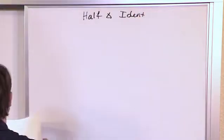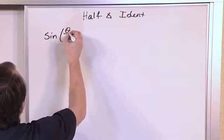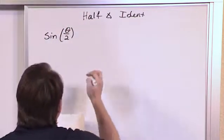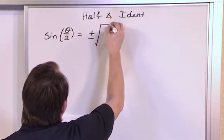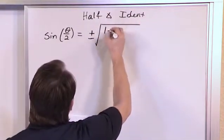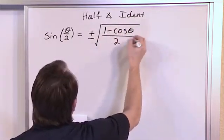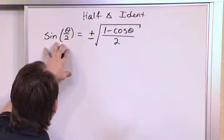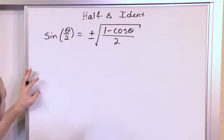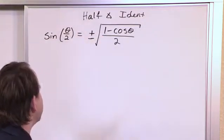The first one is sine of theta over two — one half of an angle — and that's going to be equal to plus or minus the square root of one minus cosine of theta, all over two. So what does the plus and minus mean? Basically, when you have an angle you're evaluating, you need to choose whether you use the plus or the minus sign in front of this radical.